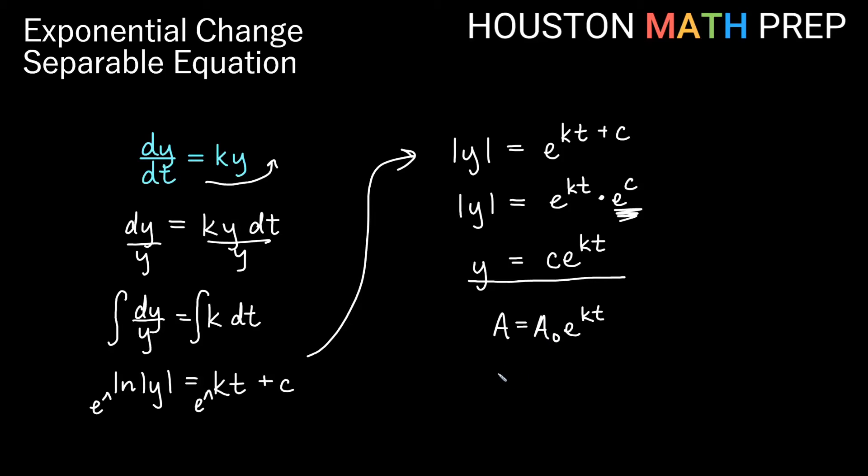You might have also seen this in terms of continuous compounding. A equals P times e to the rt. Same equation there. Exponential change is just continuous compound interest with our rate expressed as an r instead of a k.